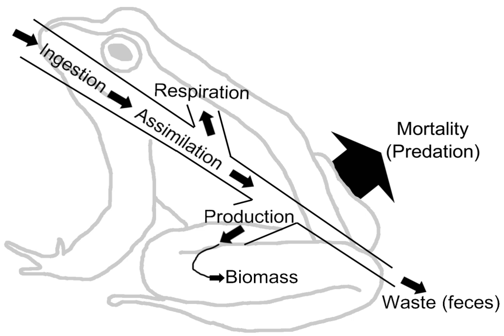Therefore, primary consumers get about 10% of the energy produced by autotrophs, while secondary consumers get 1% and tertiary consumers get 0.1%. This means the top consumer of a food chain receives the least energy, as a lot of the food chain's energy has been lost between trophic levels. This loss of energy at each level limits typical food chains to only four to six links.